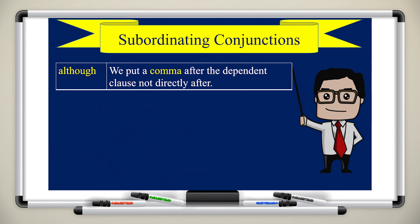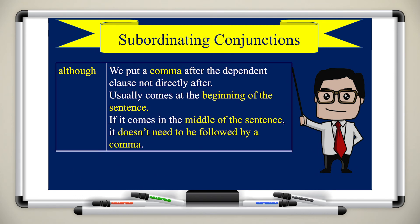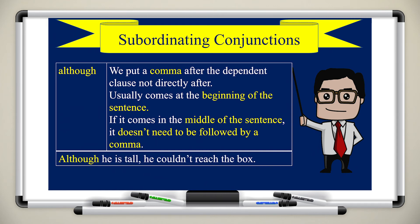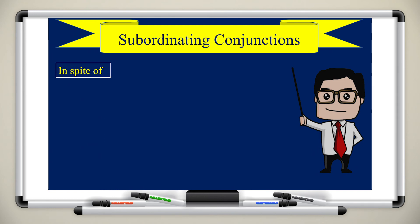'Although' usually comes at the beginning of the sentence; we put the comma after the dependent clause, not directly after 'although.' If it comes in the middle of the sentence it doesn't need to be followed by a comma. Examples: 'Although he is tall, he couldn't reach the box.' Or: 'He couldn't reach the box although he is tall.' Notice the comma placement in each case.